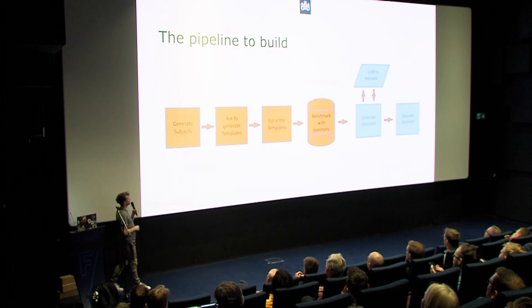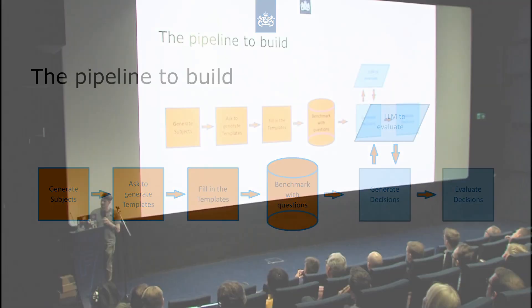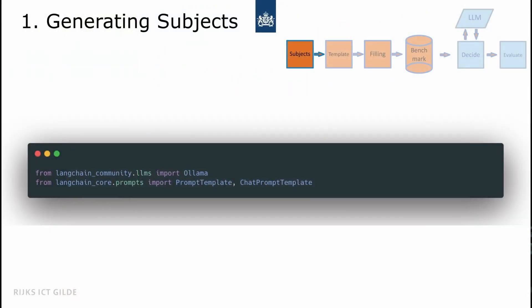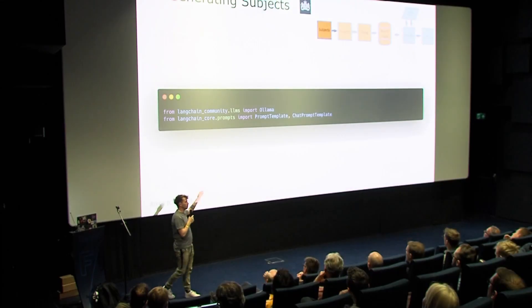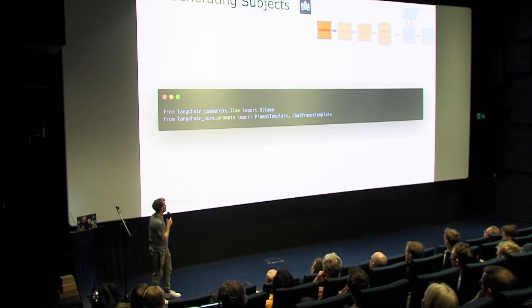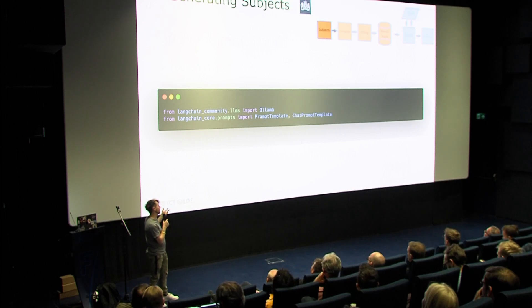These are all the steps we're going to build in our pipeline. First, we're going to import the statements. From Langchain, all these community plugins — you can actually use it as a runner. You can also import OpenAI, then you need to specify your OpenAI key and use that as a runner. But because I use open source locally with OLAMA, I'm going to import it that way. And then the core of Langchain: the prompt template and the chat prompt template.